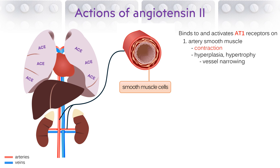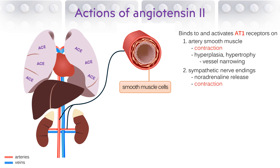This happens on a much slower timescale, but also causes blood pressure to rise. Vasoconstriction is also stimulated by AT1 receptors on sympathetic nerve terminals that innervate the artery wall. Acting on these receptors, angiotensin 2 increases the release of noradrenaline, effectively amplifying the effects of sympathetic nerve stimulation.